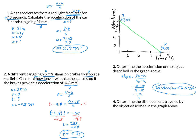Problem four: determine the displacement. Displacement is the area under a velocity-time graph — the area between the line and the x-axis. The shape is a triangle, so area equals one half base times height: one half times 4 times 10, giving a displacement of 20 meters. Review and rework these problems yourself to check your understanding, and we'll do more practice in class.